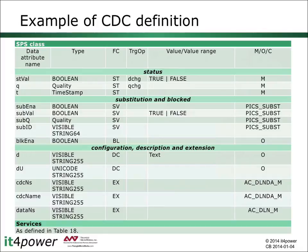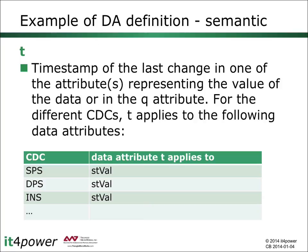A common data class is defined by a list of data attributes with references to either a basic type or a constructed attribute type, provided in part 7.3 as a table for each common data class. In addition to the attribute name and type, the table includes information about the functional constraint and the presence condition of each data attribute — which can be mandatory, optional, or based on a particular condition. Value ranges and trigger options may also be indicated. The standard also provides semantic definitions of data attributes, such as the timestamp attribute t, showing for each common data class to which data attributes the timestamp applies.